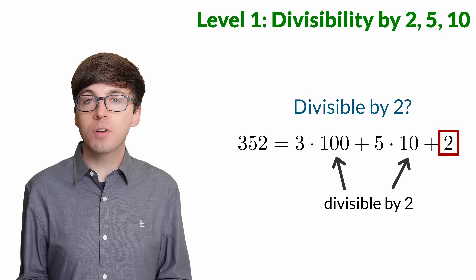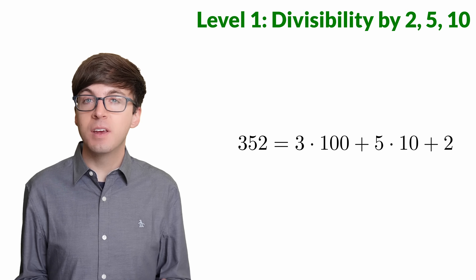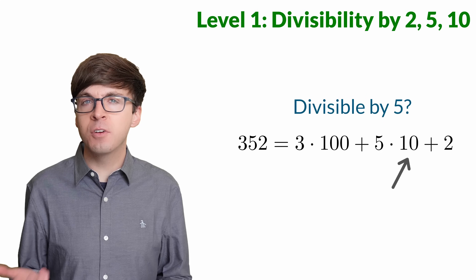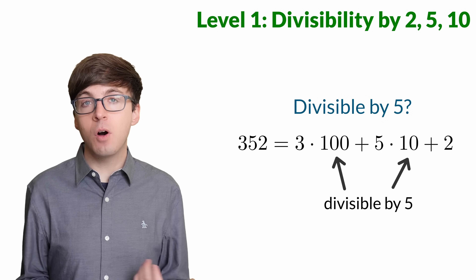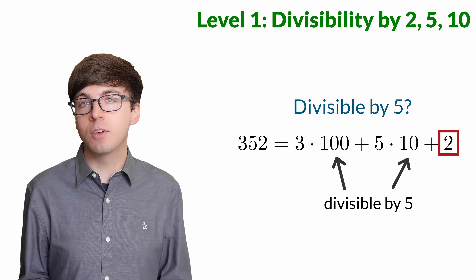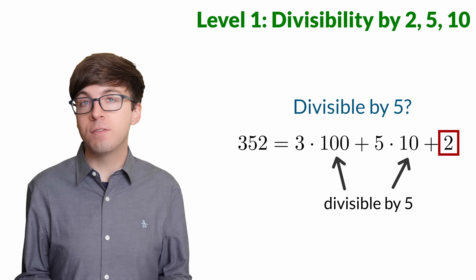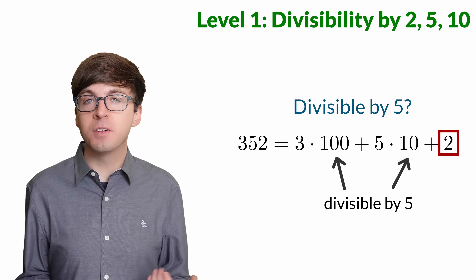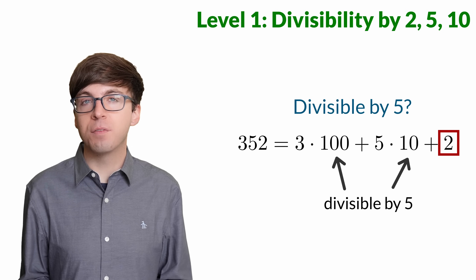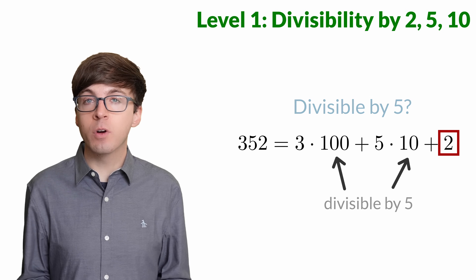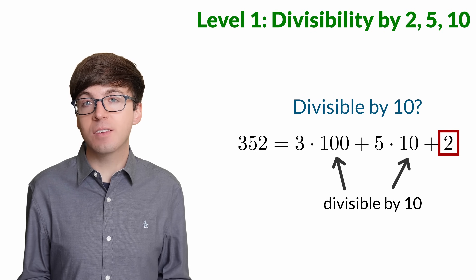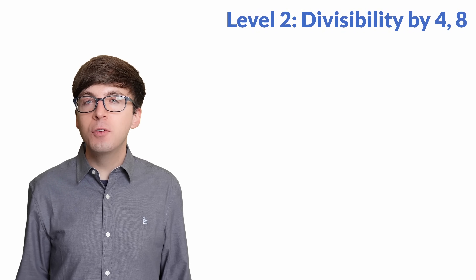The same trick works for 5. 10, 100, and so on are all divisible by 5, so all we have to look at is the 1's digit. If that digit's a 0 or a 5, then the number is divisible by 5. And that same trick works for 10 — we just check if the last digit is 0.